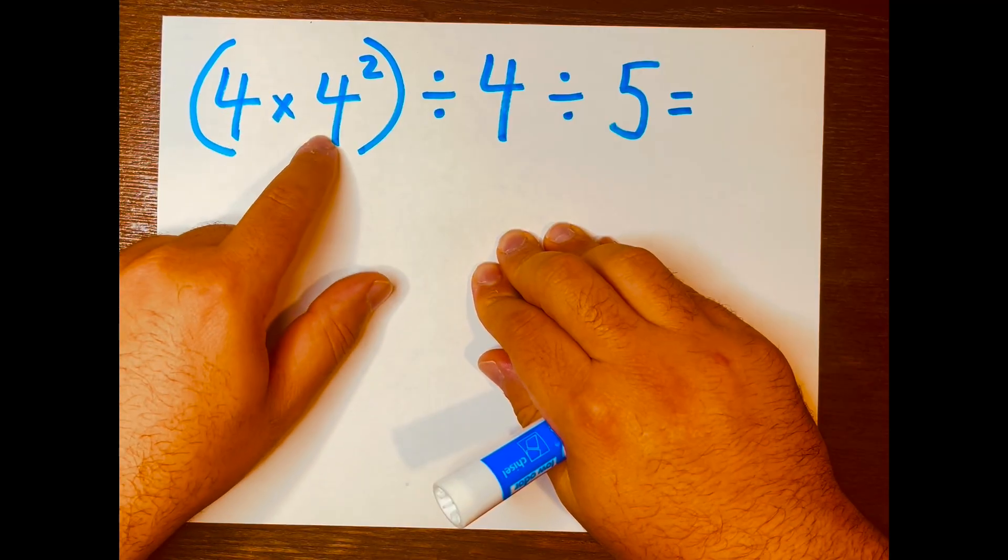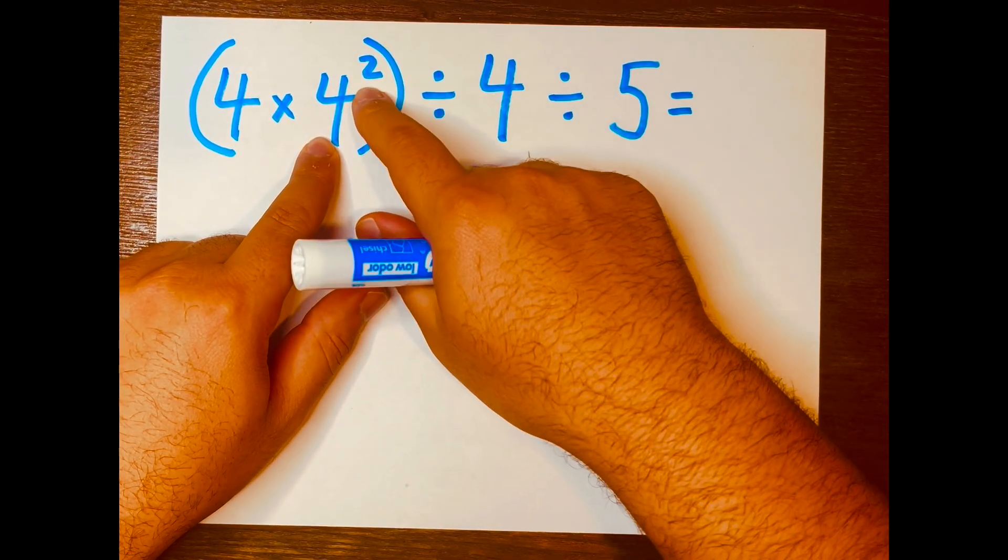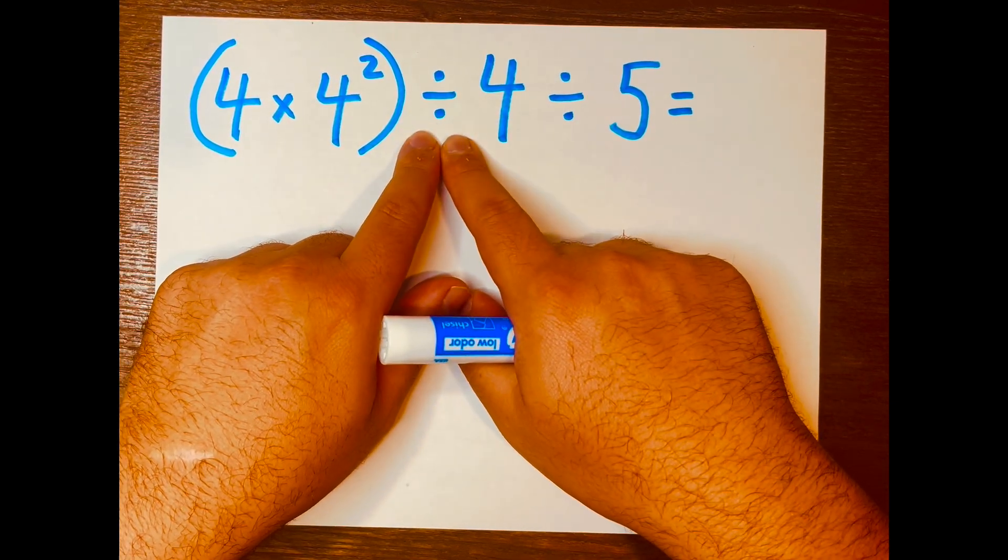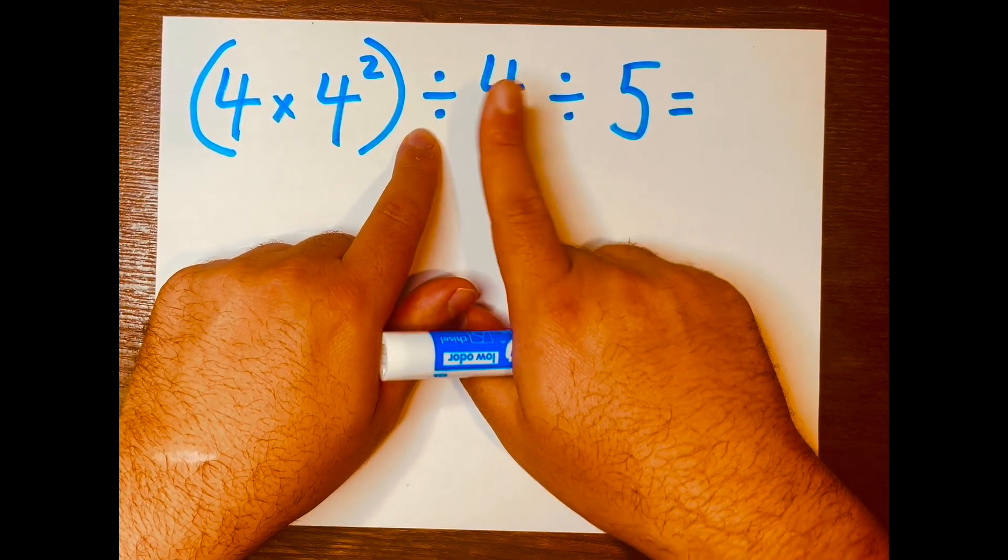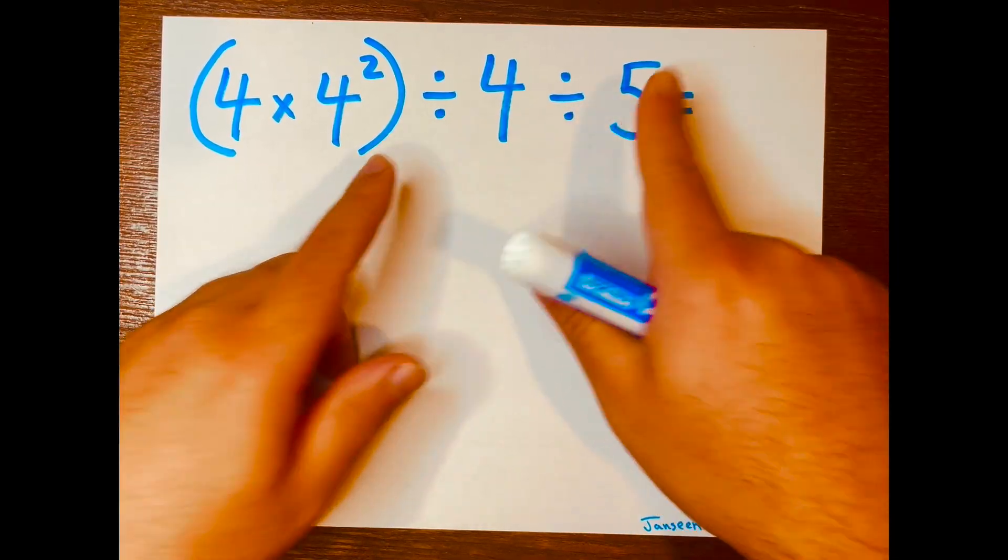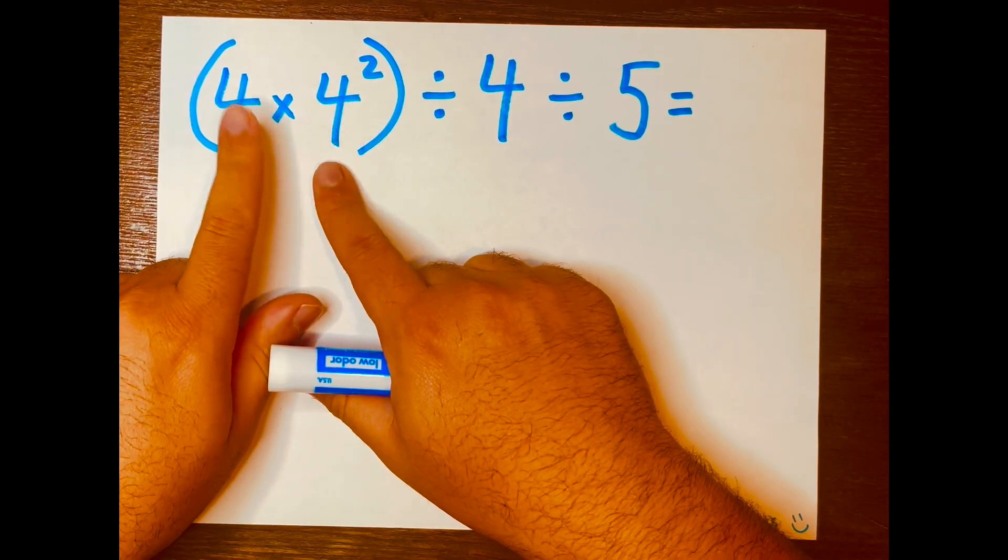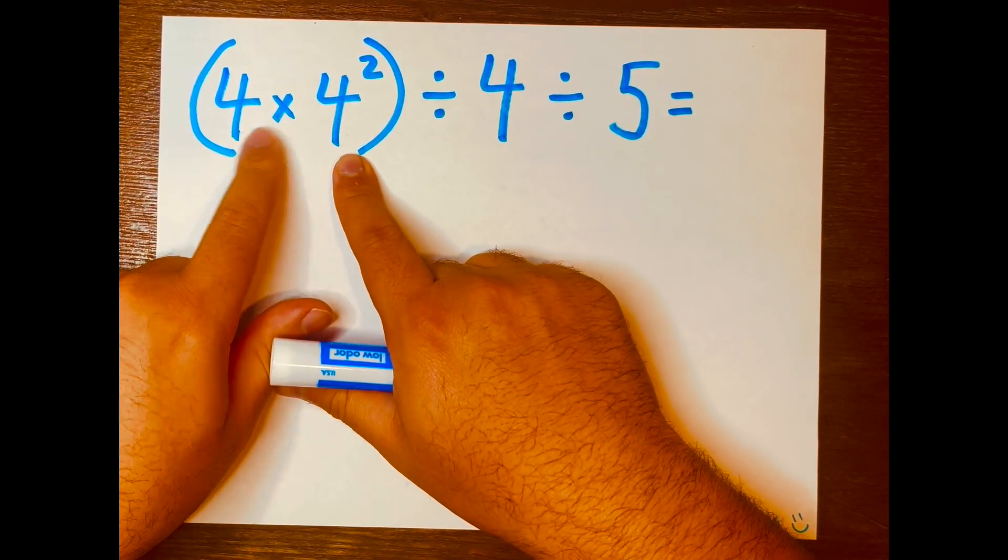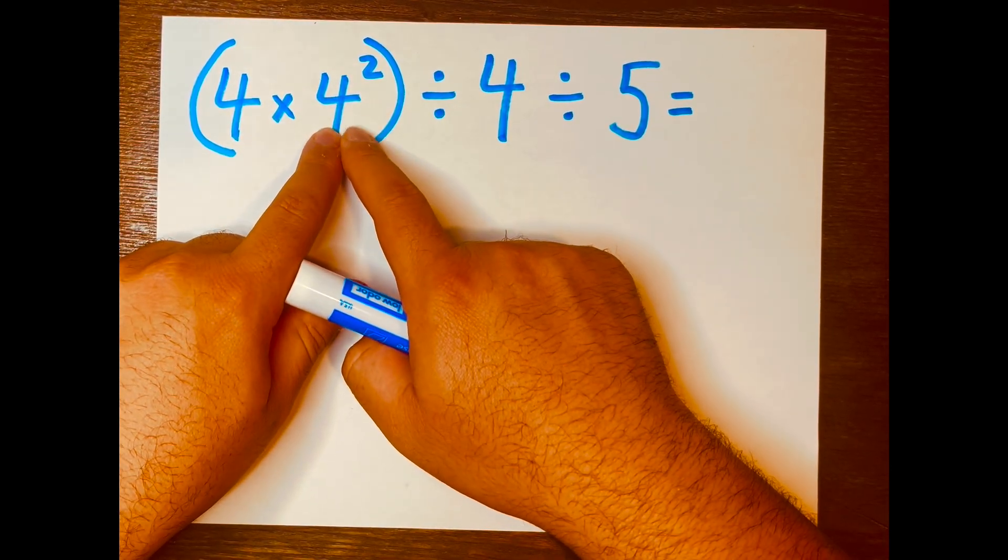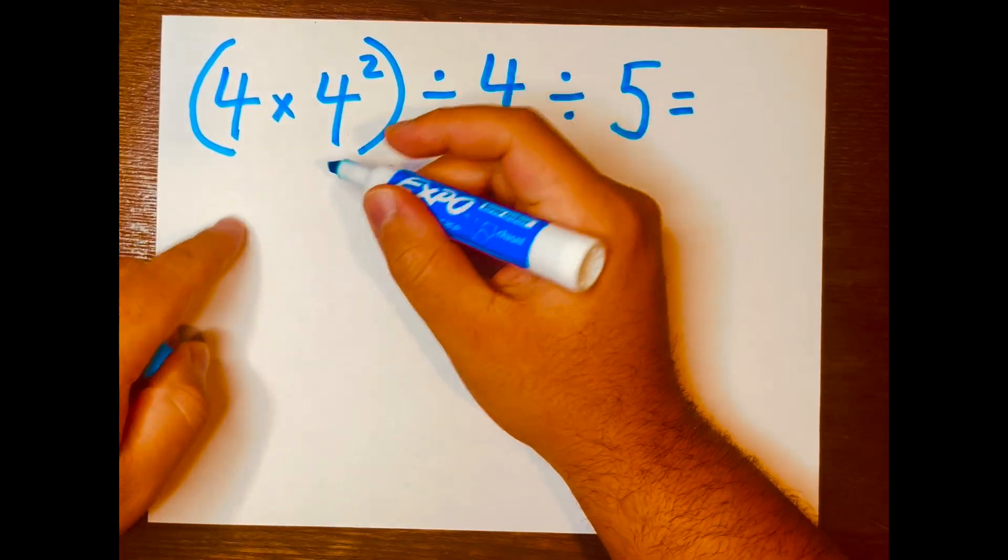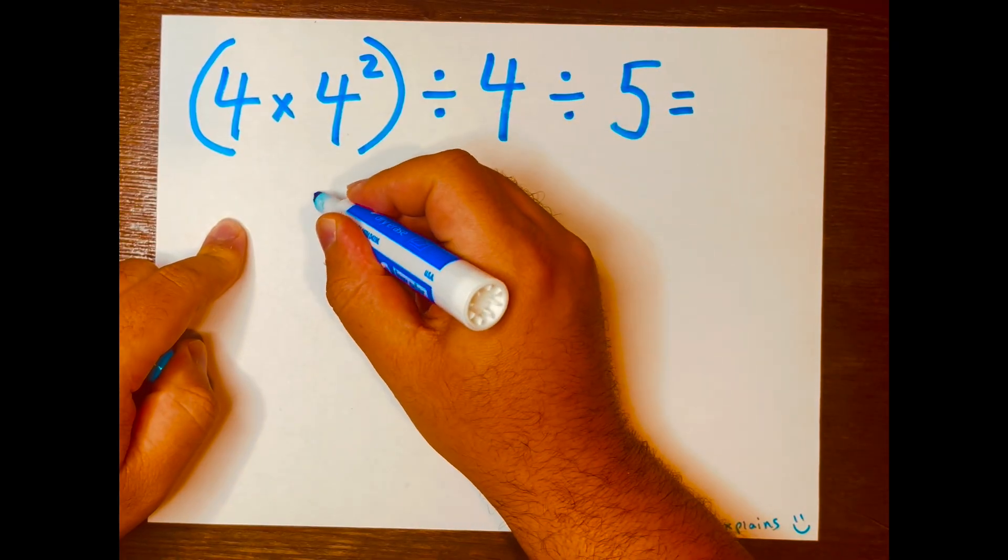We have four times four to the power of two inside these parentheses, and then we have division going on here, so divided by four divided by five. So thinking of PEMDAS, what goes first is what's inside the parentheses, and we start with four to the power of two, according to PEMDAS. So that will be four times four is 16.